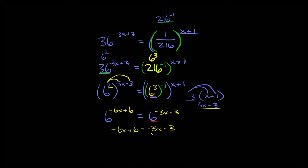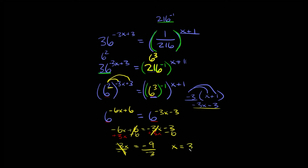Let's get all the x's on one side. Add 3x and subtract 6 from both sides. Negative 6x plus 3x is negative 3x, and negative 3 minus 6 is negative 9. So negative 3x equals negative 9. Dividing both sides by negative 3 gives x equals positive 3.